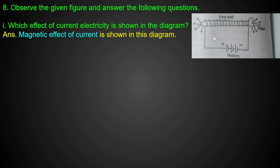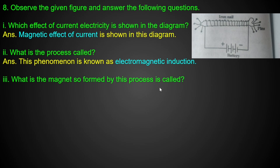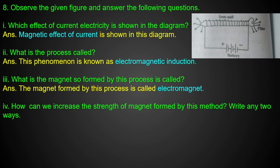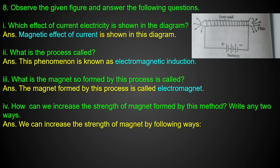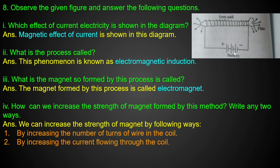The next question: which effect of current electricity is shown in the diagram? The magnetic effect of current is shown — specifically in the nail forming an electromagnet. This phenomenon is known as electromagnetic induction. To increase the strength of the magnet formed by this method, you can increase the number of turns of wire in the coil, or increase the current flow by using a higher voltage battery such as 1.5V, 3V, or 9V.